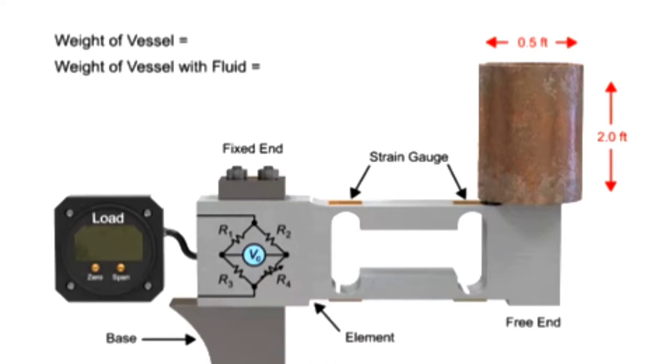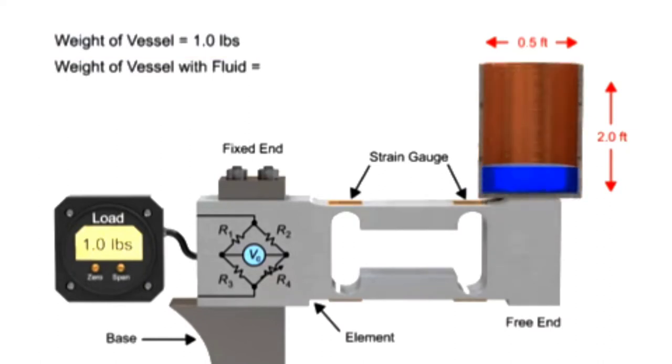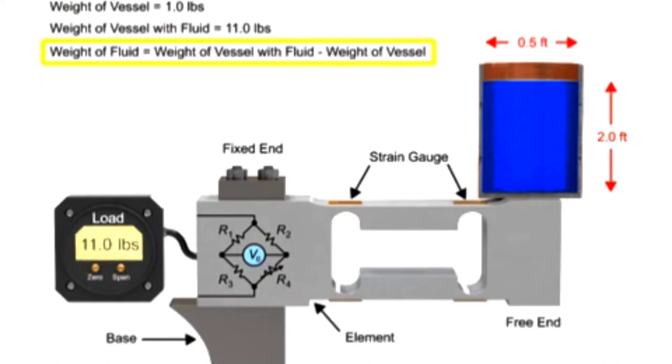The first step is measuring the weight of the vessel. Next, measure the weight of the vessel with fluid. The weight of the fluid is determined by subtracting the weight of the vessel from the weight of the vessel with fluid.